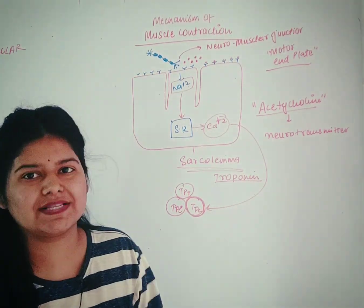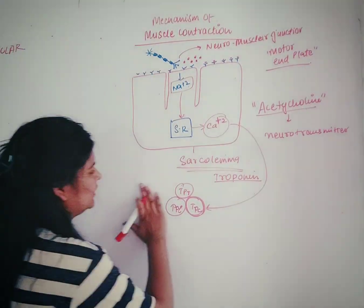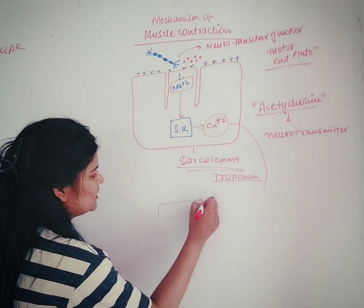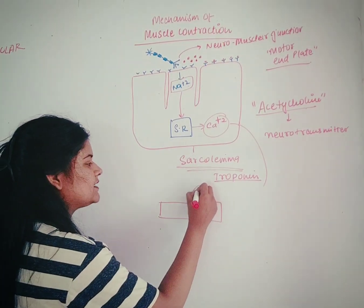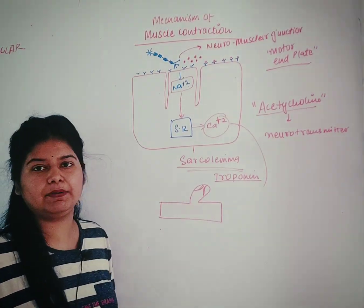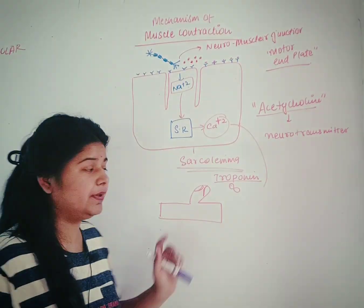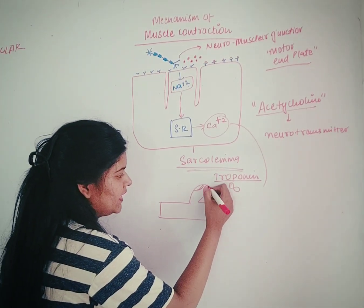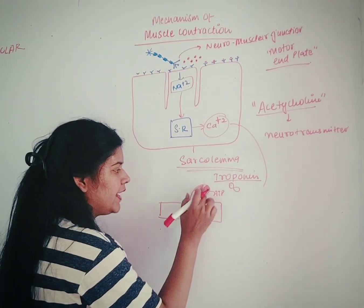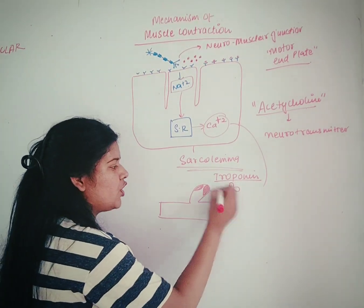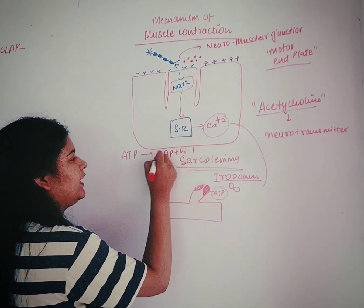Now we understand the sliding filament theory. Myosin has an active binding site, an actin binding site, and an ATP binding site. There is a low affinity towards actin when ATP is present at the binding site. To bind actin with myosin, you have to hydrolyze this ATP and convert it into ADP plus inorganic phosphate.